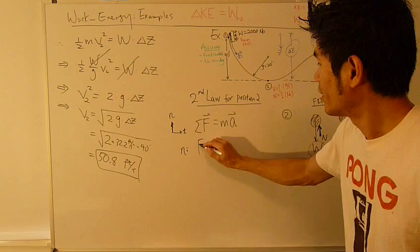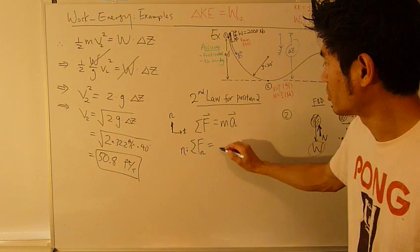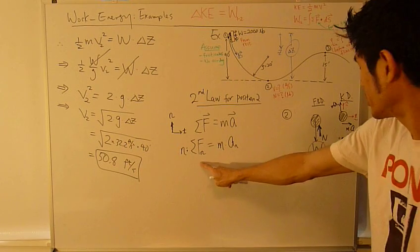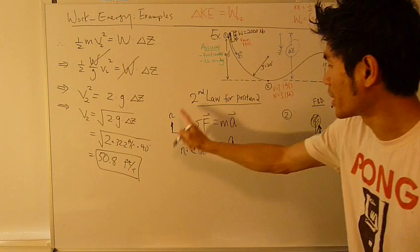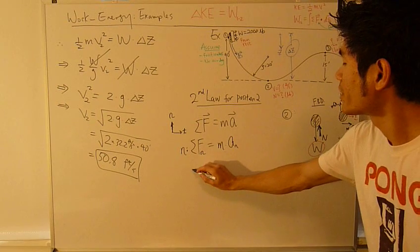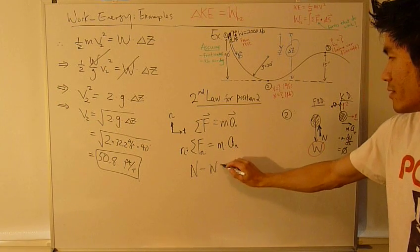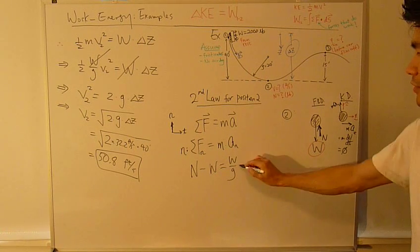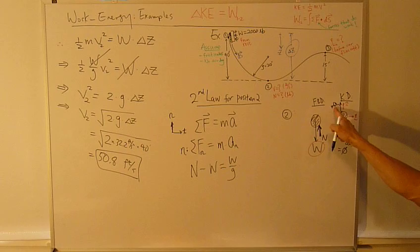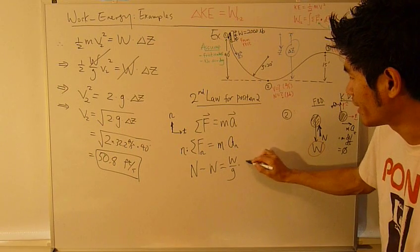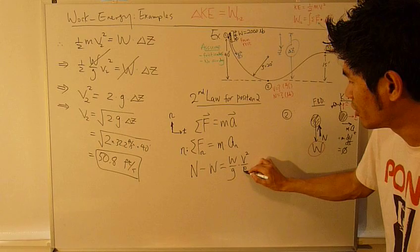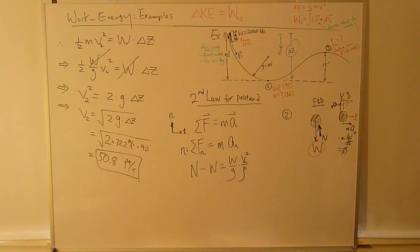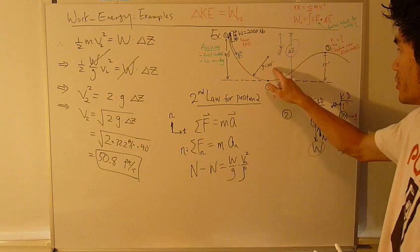I'm going to write sum of Fn equals mass times An. Since n is positive going up, left-hand side is normal force minus weight. Right-hand side, mass, which is weight divided by g, times An. What's An? From chapter 12, An is V squared over rho. That's V2. V2 squared over rho is given.